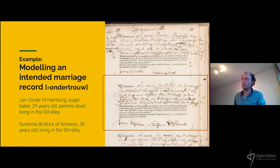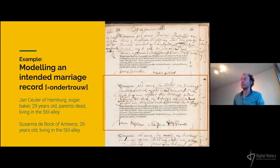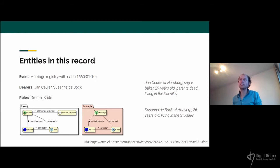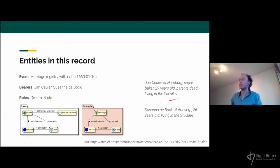To illustrate this with material, here is an example of an intended marriage from 1660 — a registration of the intention to get married before the marriage event. We find a marriage registry took place with at least two bearers: Jan Koehler and Susanne de Bok. Jan Koehler of Hamburg, a sugar baker, 29 years old, parents dead, living in a Still Alley. Susanne de Bok of Antwerp, 26 years old, also living in a Still Alley.